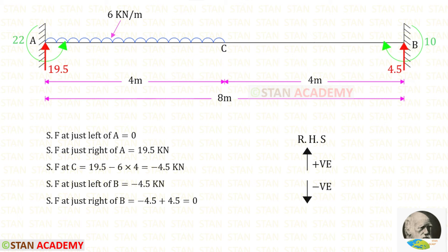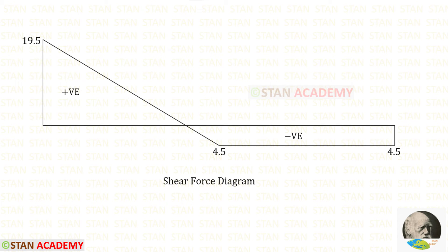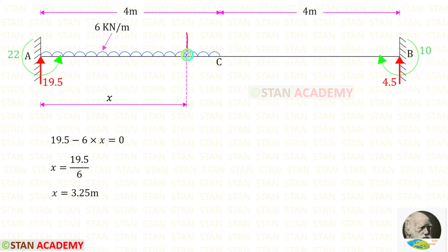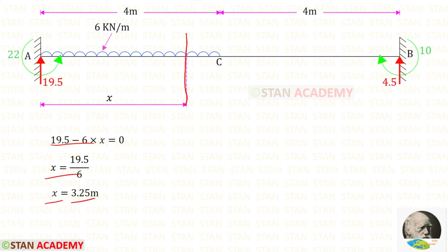Now we can draw the shear force diagram. I am going to find the shear force values from point A towards point B, following the right-hand side rule where upwards is positive and downwards is negative. Using this rule, the shear force values have been calculated and the shear force diagram is shown. At one point the shear force becomes zero — at that point there will be the maximum positive bending moment. Making a section at distance x from point A where shear force equals zero, I have found x = 3.25 m.